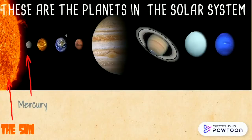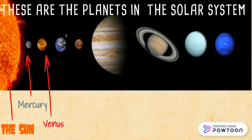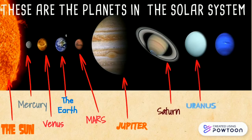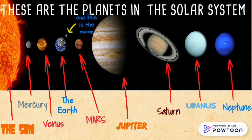These are the planets in the Solar System. The Sun is at the center, then we have Mercury, Venus, the Earth, Mars, Jupiter, Saturn, Uranus, and Neptune.